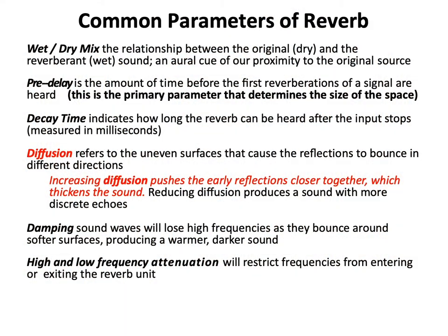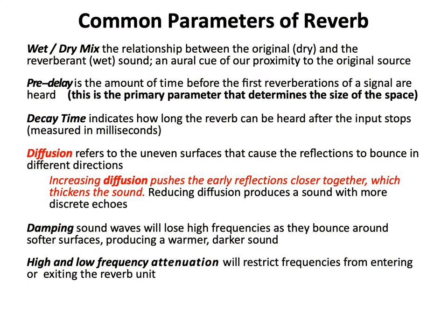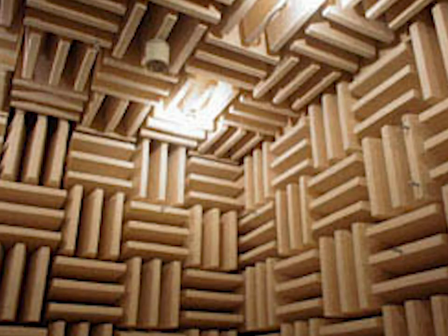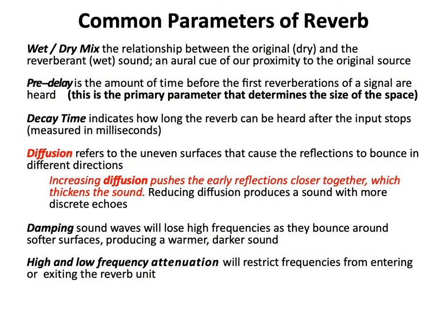Diffusion refers to uneven surfaces that cause reflections to bounce in different directions. Parallel surfaces might produce a slap echo, while irregular surfaces break up those standing waves for a more natural sound. Increasing diffusion pushes early reflections closer together, thickening the sound. Reducing diffusion produces more discrete echoes — that slap effect. Damping: sound waves lose high frequencies as they bounce around softer surfaces, producing a warmer, darker sound. High and low frequency attenuation restricts frequencies from entering or exiting the reverb unit, which happens naturally in reverberant spaces.